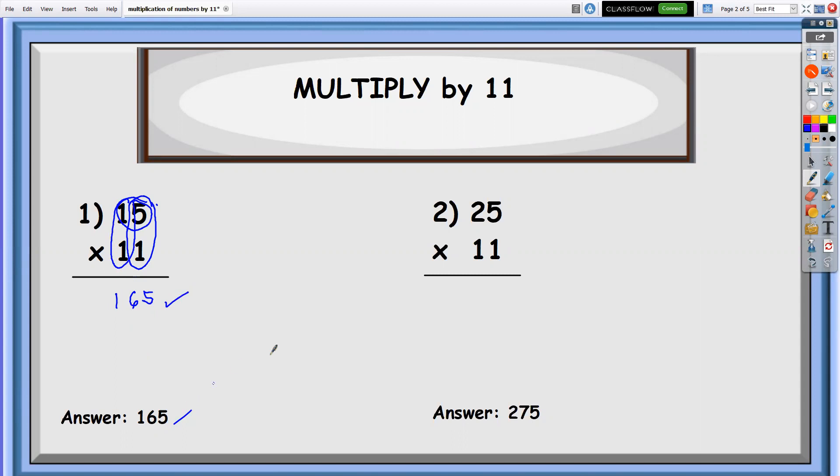Next, we have 25 times 11. Let's check if this is correct. So multiply five times one, that is five. Two plus five, that is seven.